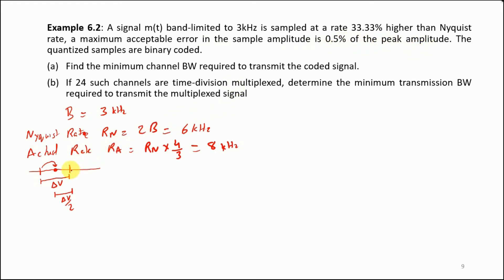This means that this range, which is Δv/2, should be 0.5%, that is 0.5/100 of the peak amplitude Mp. Mathematically, this whole statement suggests this expression. But we also note that Δv/2 is simply Mp/L. If we equate these two equalities, this Mp would cancel, and hence we can simply say that L is 100 divided by 0.5, which is equal to 200.